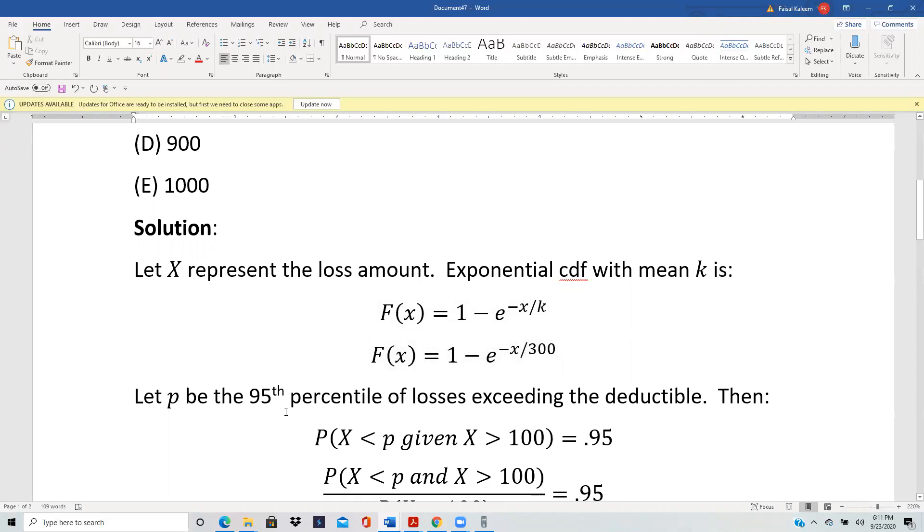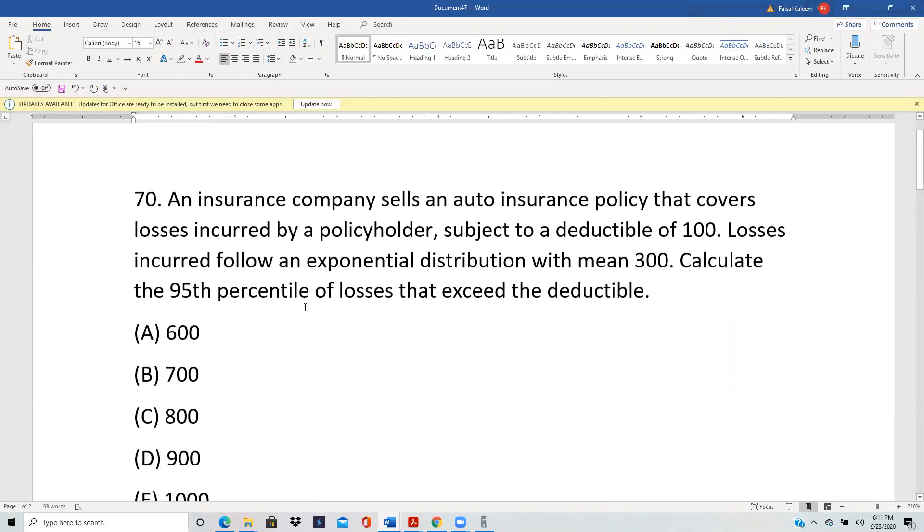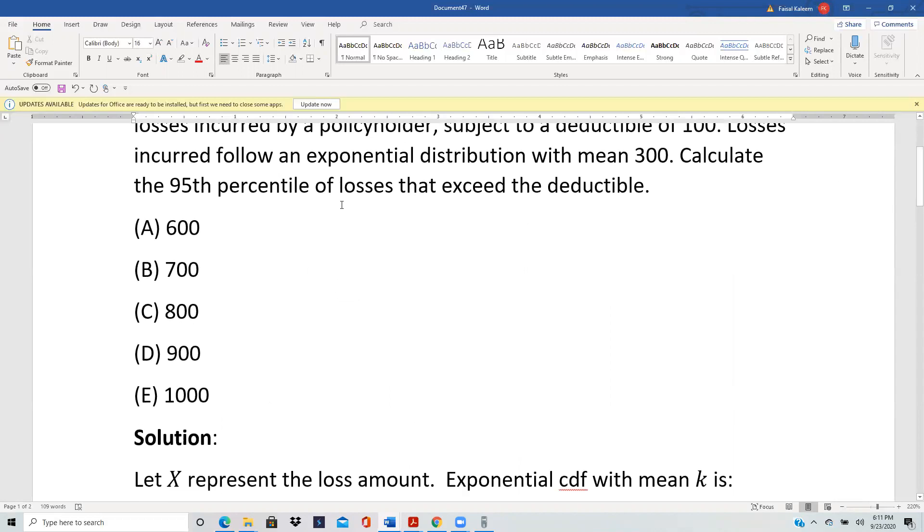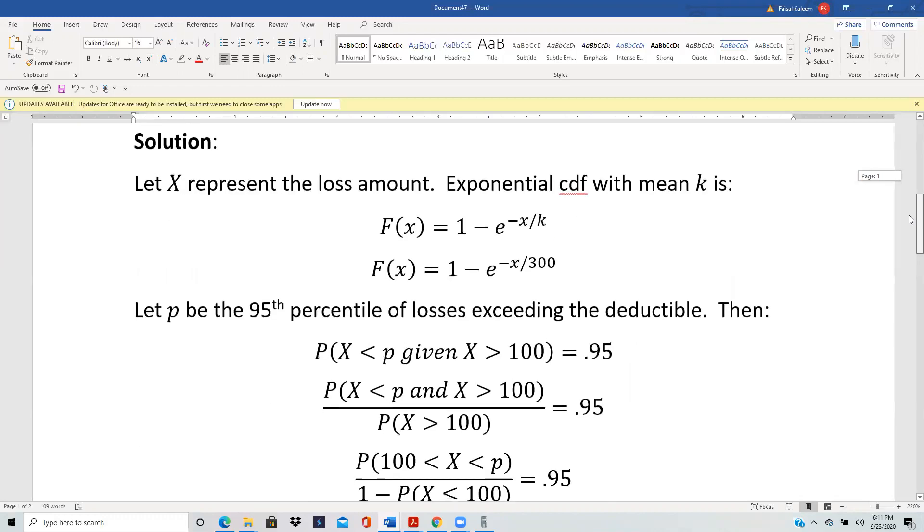So we need to find the 95th percentile of losses exceeding deductible. If we were to only calculate the 95th percentile of losses without the mention of exceeding deductible, then if P is that 95th percentile, it would be simply the equation P(X < P) = 0.95. But we want to find the 95th percentile of losses exceeding deductible.